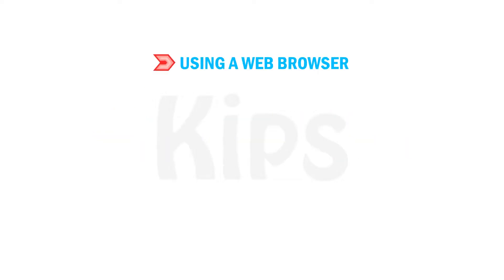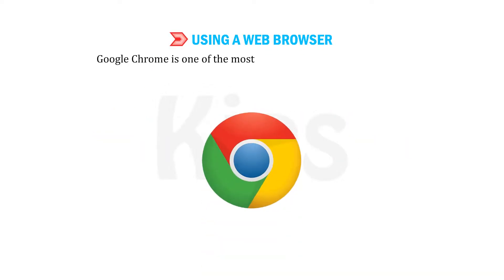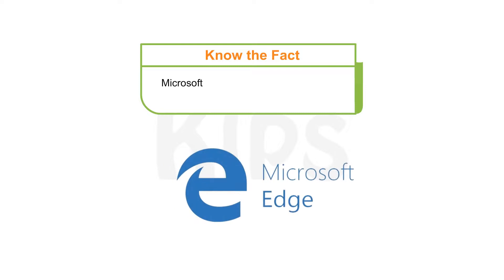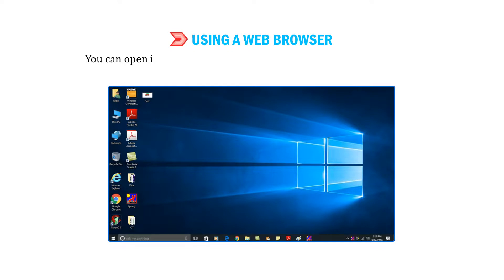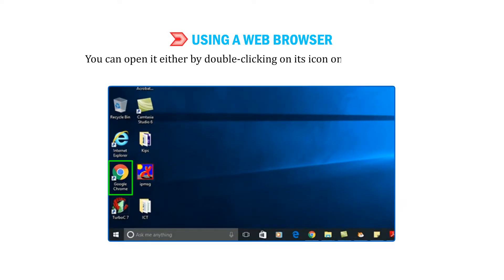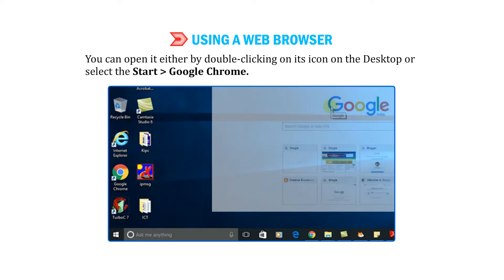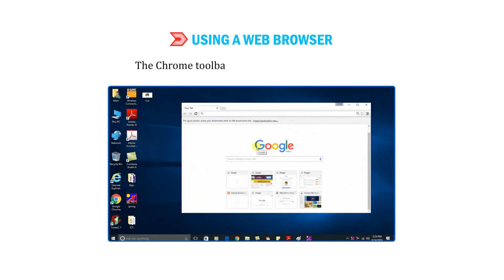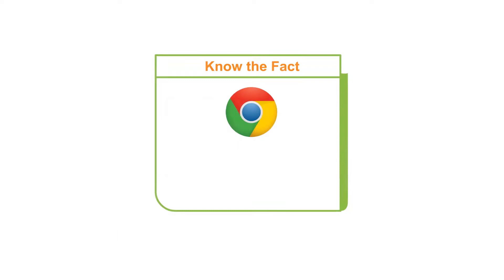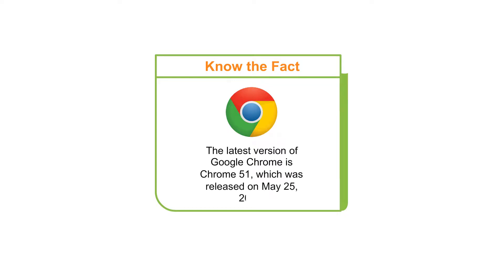Google Chrome is one of the most popular and widely used web browsers, developed by Google. Note that Microsoft Edge is the default browser of Windows 10. You can open Google Chrome by double-clicking on its icon on the desktop, or by selecting Start and going to Google Chrome. The Chrome toolbar is shown in the figure below. The latest version of Google Chrome at this time is Chrome 51, which was released on May 25, 2016.